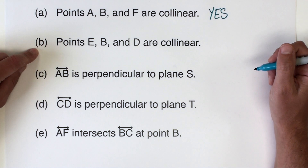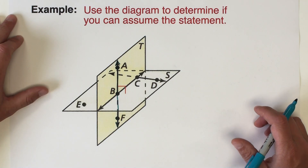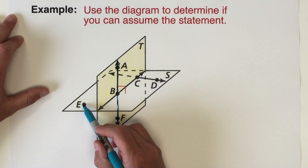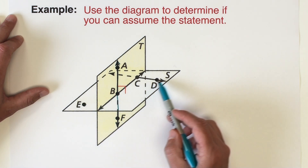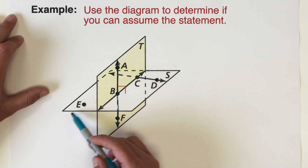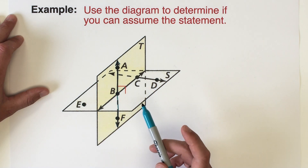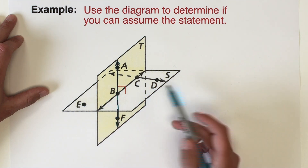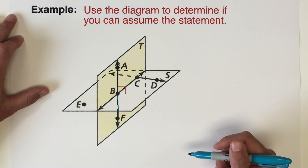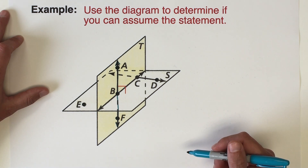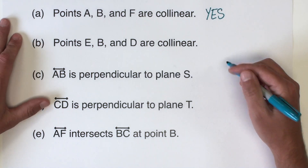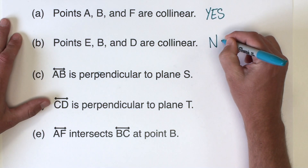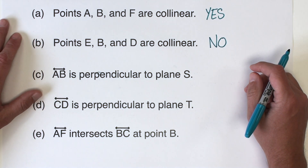The next statement says points E, B, and D are collinear. We have three points — here's E, here's B, and here's D — and it looks like those points could be in a straight line. Unfortunately, there is not a line drawn actually connecting those points. Since we don't see a line there, we cannot assume those points are collinear. So the answer is no.